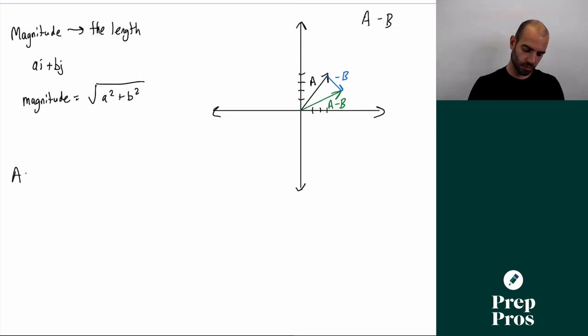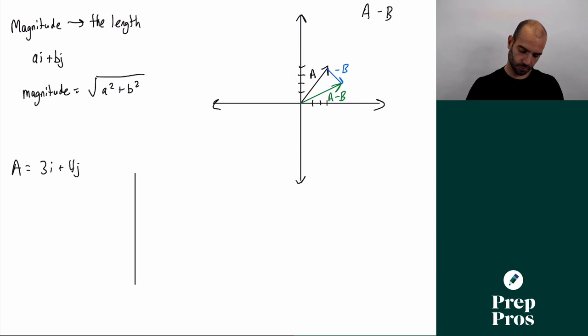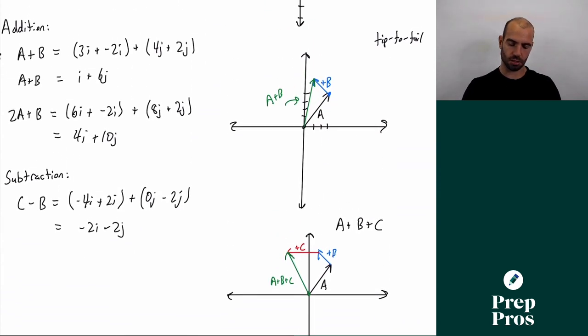So using our example vector from earlier which was vector A which was 3i plus 4j, if I draw this out to find the magnitude, it's the length of the vector. So it goes over 3, it goes up 4. So this is going to be the length of our vector. You can kind of think of the Pythagorean theorem. This is 3, this is 4. So it's basically 3² plus 4² equals our third side squared. It ends up that if you use the Pythagorean theorem, the magnitude of that vector is 5. So if I ever ask about the magnitude of the vector, it's the length. Otherwise, more common stuff you're going to see on the test is doing this tip to tail stuff that we talked about. And of course earlier on the test you'll see some more of the easier, just simple addition subtraction type questions.